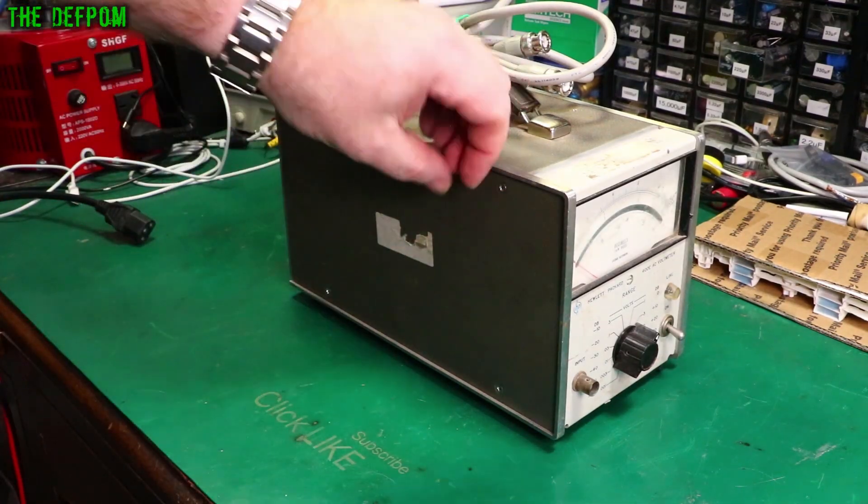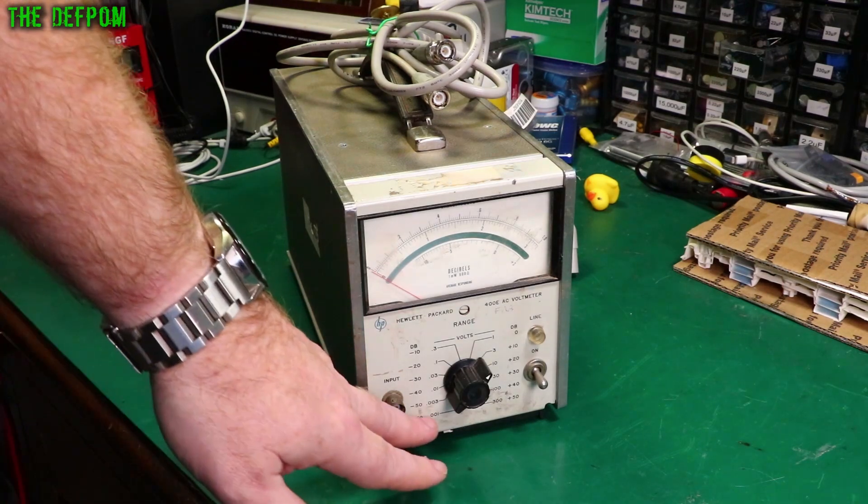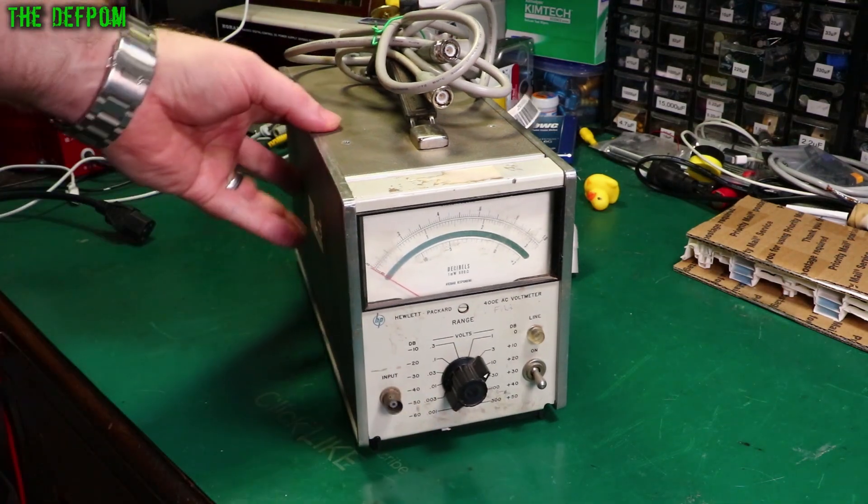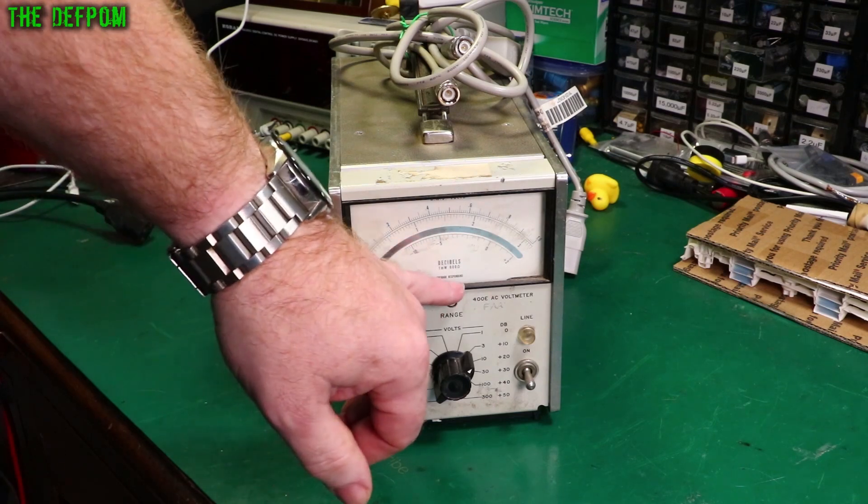So I'm going to look at this thing here. This is an HP 400E AC voltmeter. Covers 1 millivolt to 300 volts AC. Also does dBm and stuff like that, based on 600 ohms.